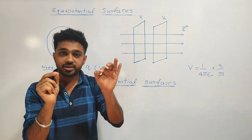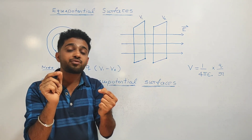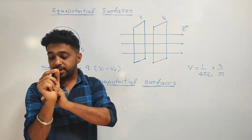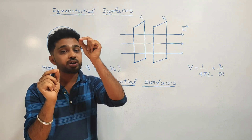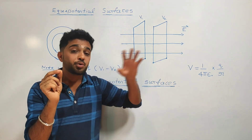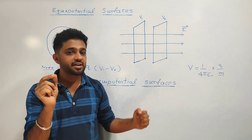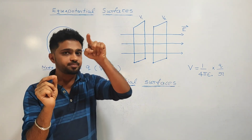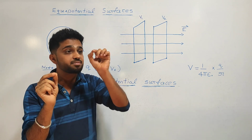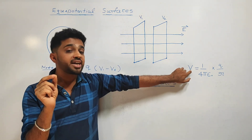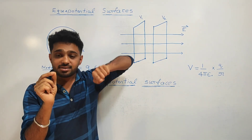Similarly, we can calculate the electrostatic potential at distance 0.5 meter. Q is the same charge, 1 upon 4 pi epsilon naught is constant, R is constant — so all those points have the same potential. That surface is the same equipotential surface.